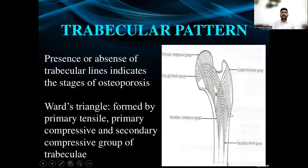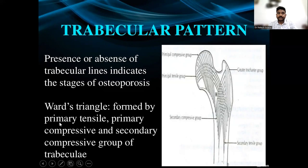There are a few trabecular patterns in the anatomy of the femoral head and neck. They are the principal compressive group, secondary compressive group, principal tensile group, secondary tensile group, and greater trochanter group. The presence or absence of these trabecular lines indicates the stages of osteoporosis. Ward's triangle is formed primarily by the primary tensile, primary compressive, and secondary compressive groups of trabeculae.